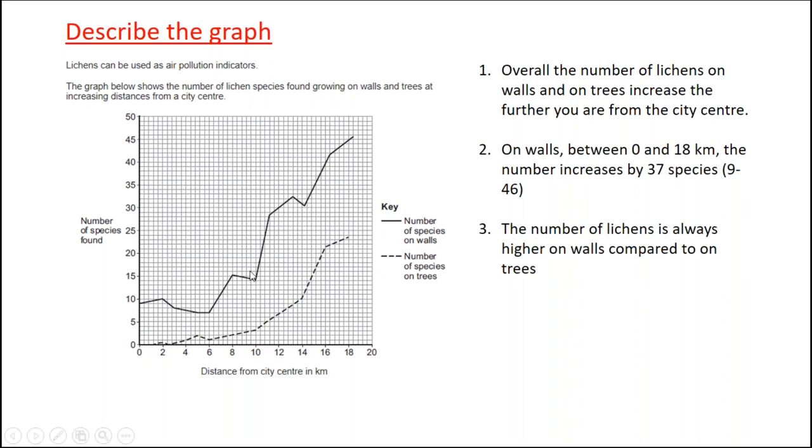Another fact I can see is that the number of lichens is always higher on the walls compared to the trees. And again, we could probably get a little average. It's usually about 10 species higher. That's 13 species higher here. Actually, it's about 24 species higher, but it's always higher. So there's my description. I've said what I can see and I've given data to back it up. I've stated what I can see and I've given data to back it up.